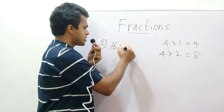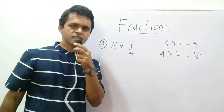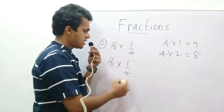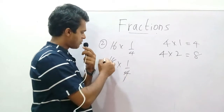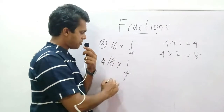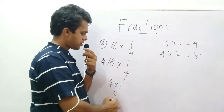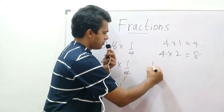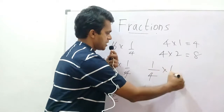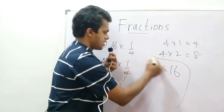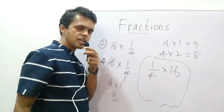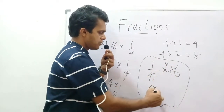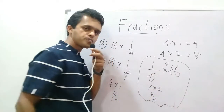Number 2: 16 into 1 over 4. How can you simplify this? We can simplify: 1 time and 4 times. 4 into 1 is 4. Right? The same sum here: 1 fourth into 16 is the same sum. 1 time, 4 times: 1 into 4 equals 4.